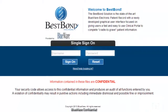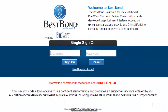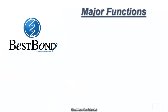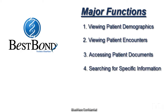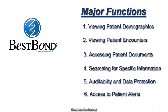BestBond is an online portal made to help you find pertinent records in a fast and easy manner. Major functions include viewing patient demographics information, viewing patient encounters, accessing patient documents, searching for specific patient information, auditability and data protection, and finally, patient alerts.